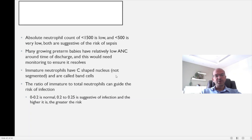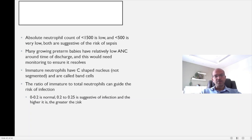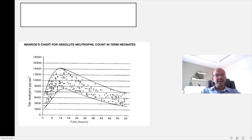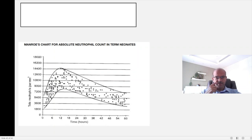Immature neutrophils have a C-shaped nucleus which is not segmented — these are called band cells. When the baby has acute exposure to infection, band cells are released from the bone marrow. This is called a left shift. The ratio of immature to total neutrophils can guide infection risk: 0 to 0.2 is normal; 0.2 to 0.25 is suggestive of infection; the higher the immature cell count, the higher the risk of infection and possibly poorer the prognosis. Monroe's and Mazinho's charts for very low birth weight babies show the absolute neutrophil count in the immediate postnatal period — there is a surge which drops and settles by day 2 to 3, so you must correct for the age of the baby.